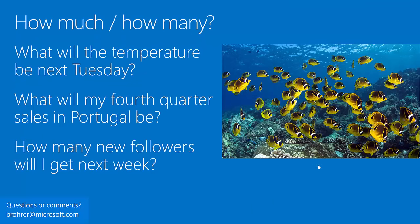The first is 'how much or how many?' — examples: what will the temperature be on Tuesday, or what will my sales be next quarter? These are questions that ask for a number. The type of algorithm that answers this is called regression — it may involve fitting a line, a curve, or a surface to the data that can be used as a simplified version, a cartoon version, of the data. 'How much or how many' is a very common question to ask of your data.